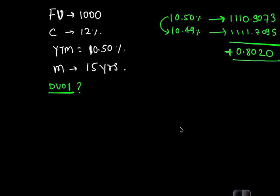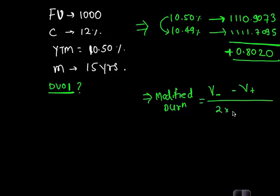Now let us see if we can calculate a duration for this bond, a modified duration. So the formula of modified duration is V minus minus V plus divided by 2 into V0 into delta Y. Let us assume a reasonable 1% delta Y. Will you be able to do this? Try doing it by yourself. V minus is the bond price when the yield would be 9.5, and V plus is the bond price when the yield would be 11.5. So just plug the values into the formula.